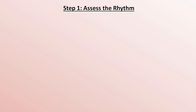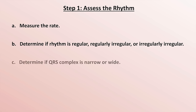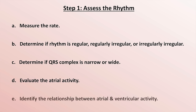So in summary, when assessing the rhythm: first measure the rate, then determine if the rhythm is regular, regularly irregular, or irregularly irregular. Determine if the QRS complex is narrow or wide. Evaluate the atrial activity. And finally, identify the relationship between atrial and ventricular activity. Going through these five components to rhythm assessment thoughtfully and deliberately will result in an accurate diagnosis of the rhythm for all but the most unusual and difficult of EKGs.